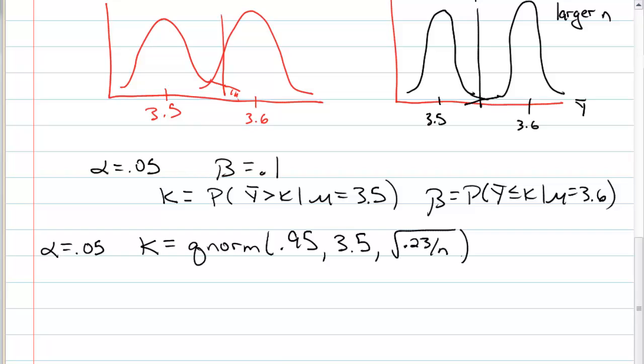We can also find k the same way because now we know beta. We could say that's qnorm of beta, which in this case is 0.1. That's the area to the left. Beta is 0.1 given the alternative, 3.6, 0.23 over square root of n. So both of these equations have a k and an n. The k has got to be equal. That's our decision boundary.